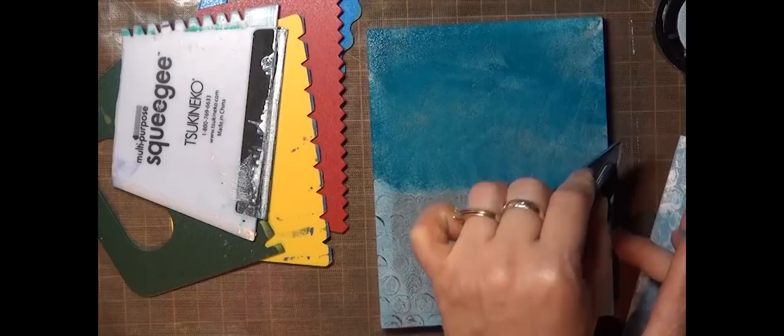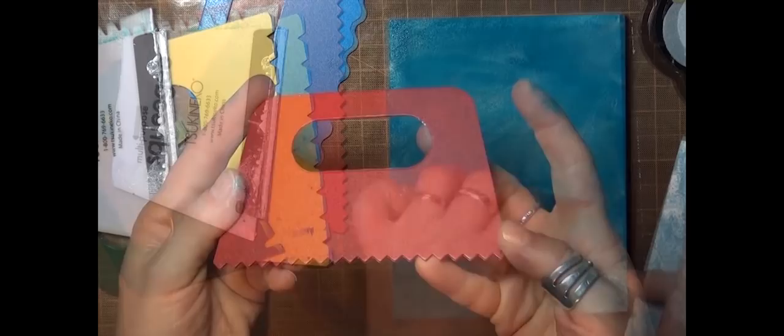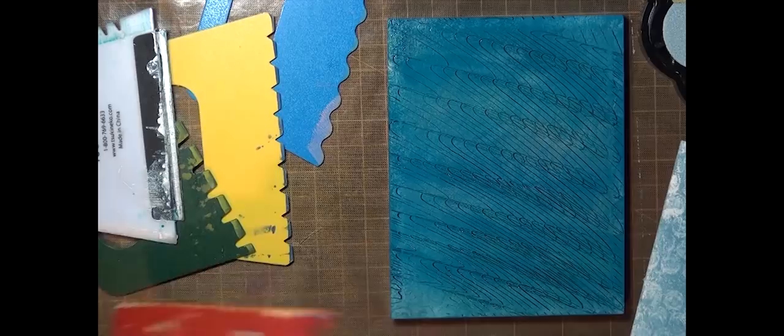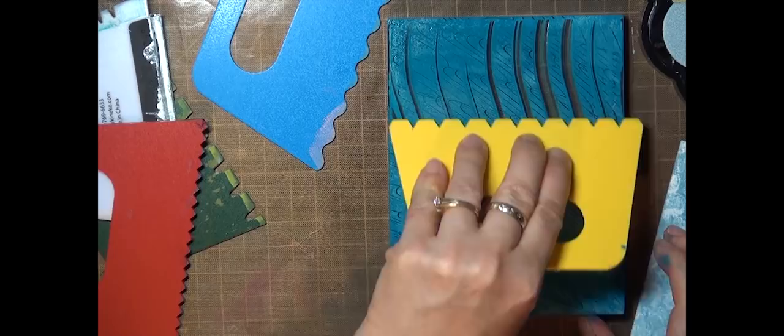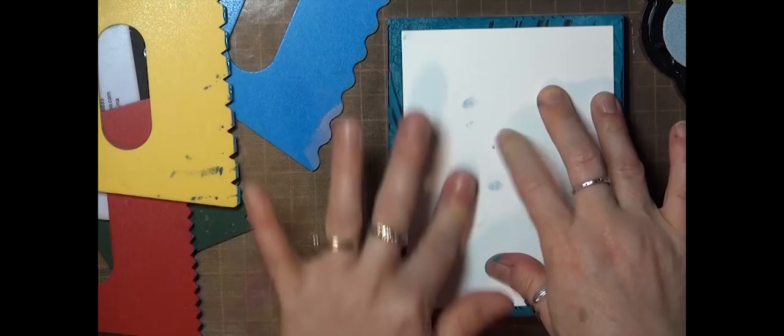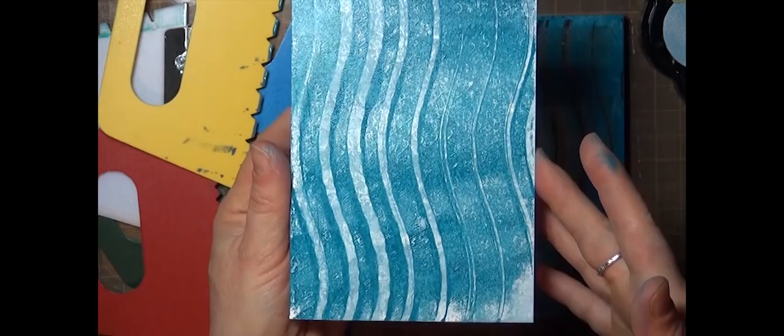I'm covering the block with my darkest blue ink now, and I'm going to use these texture tools to add some wave patterns to the ink. These are just inexpensive children's art tools; you don't need anything fancy. One more print, and again you can see how the earlier layers peek through those waves and add depth to the print.